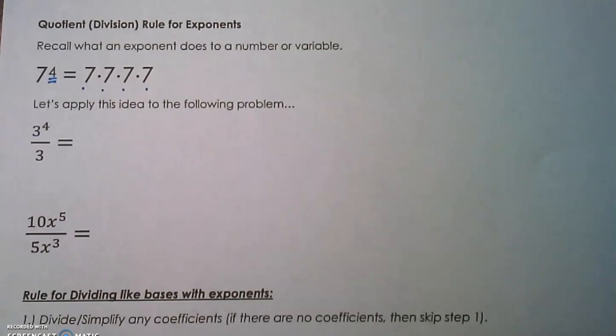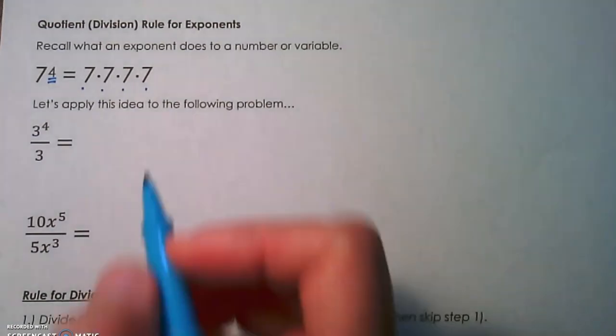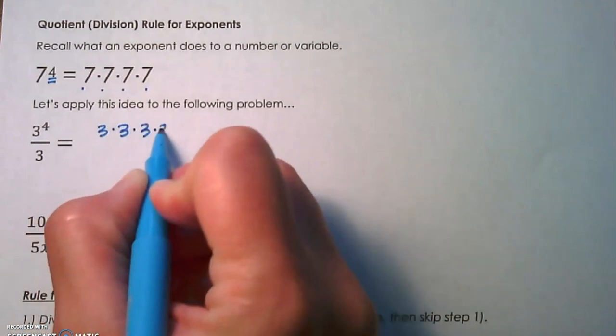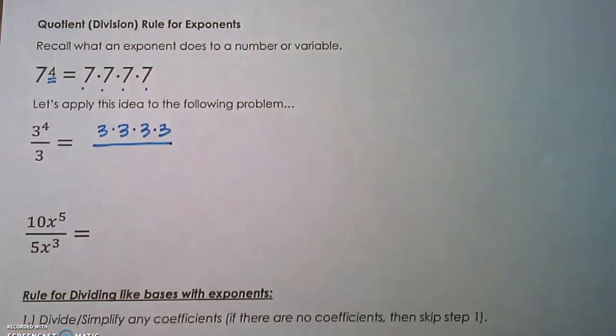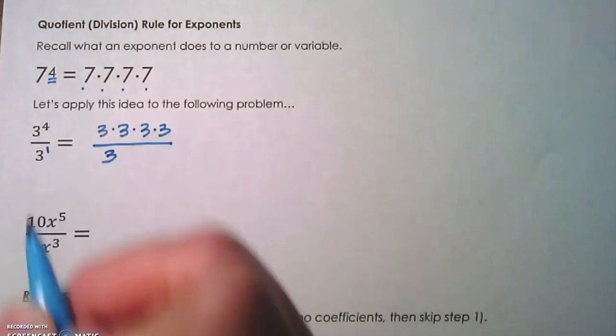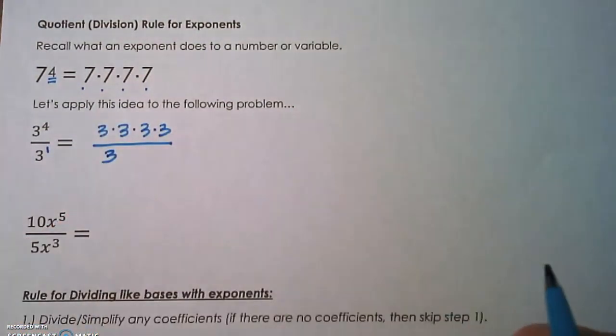3 to the fourth power is 3 used as a factor four times. Remember that a fraction bar is a division sign, so we're going to divide that by 3, and that's 3 to the first power. Now we're looking for common factors in the numerator and denominator that we can cancel out.